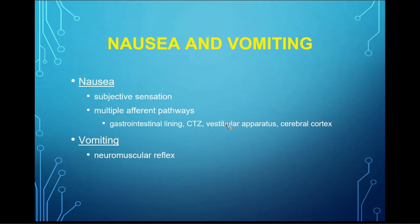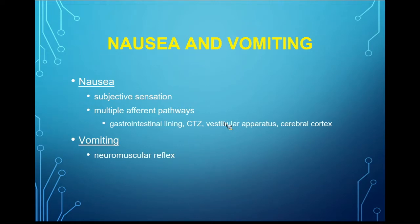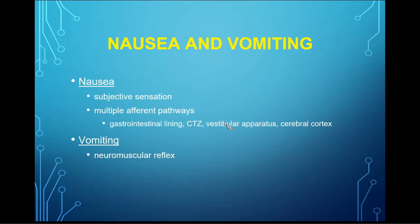The first topic is nausea and vomiting. Nausea is a subjective sensation. There are multiple afferent pathways because our organ systems are lined with receptors that send signals to the brain, especially when we have abnormal toxins and chemical imbalances in the body. These afferent pathways come from four areas: the gastrointestinal lining, the chemoreceptor trigger zone, and areas in the cerebral cortex. The vomiting mechanism is a neuromuscular reflex — stimulated opiate receptors send signals via the spinolimbic tract, and the cerebral cortex sends signals back down to the GI tract to create vomiting via the corticospinal pathway.